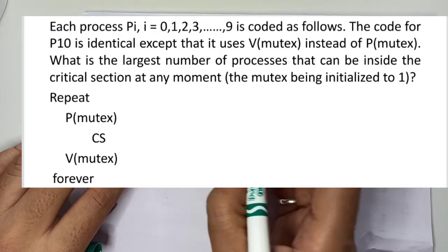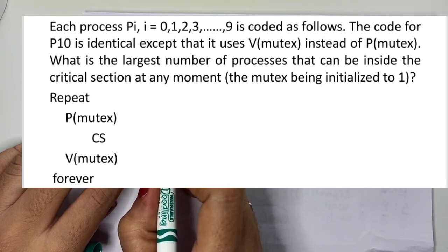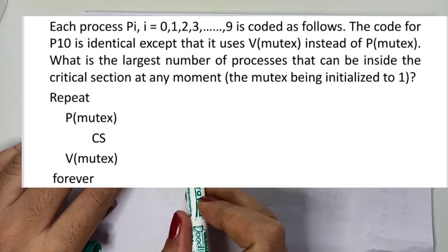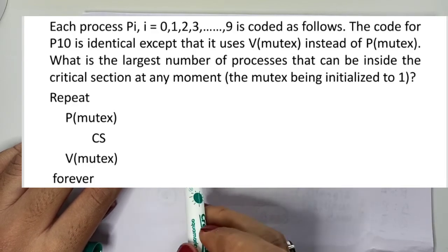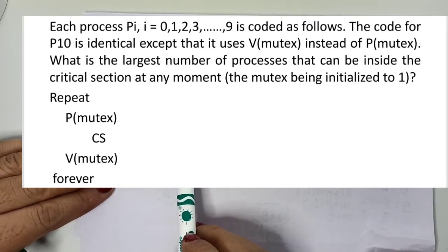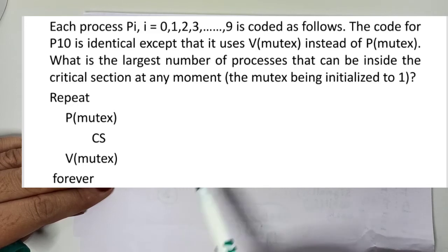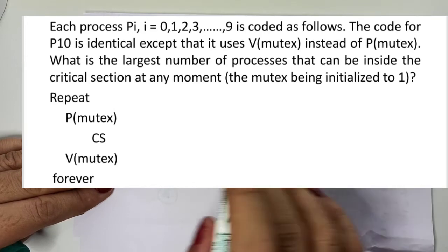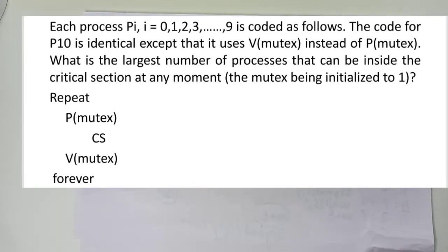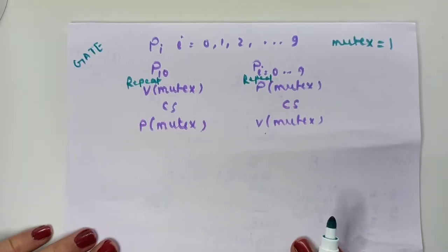There is another process, P10, which is the 11th process with process ID 10. Its code is just the opposite: it does V(mutex) first — a signal operation — and then P(mutex), the wait operation. The question is: what is the largest number of processes that can be inside the critical section at any moment?